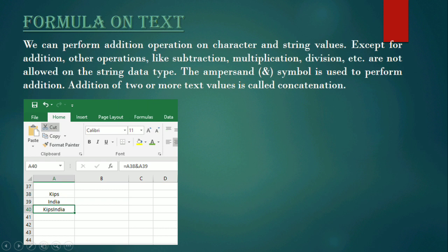For example, Kips India is a string value. If you divide Kips India into two words — Kips and India — both are string values, and the combination of those two words is also another string value. We can apply a formula on text values, but we can use only the addition operation on text values. We cannot use subtraction, multiplication, or division. To perform the addition operation on text, we use the ampersand symbol. This operation is known as concatenation — the addition of two or more text values is known as concatenation.